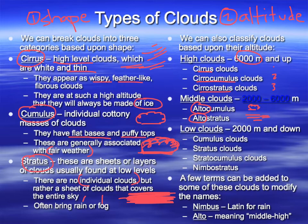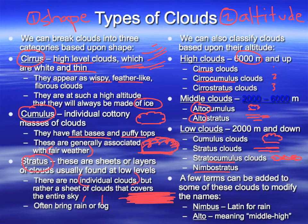Our low clouds, just a few thousand meters off the surface, include cumulus clouds, stratus clouds, and a combination of those two — stratocumulus — and then nimbostratus. If you include the word 'nimbus' on any cloud, it means it's raining. You also have cumulonimbus, which we'll learn a lot about later in the year because cumulonimbus clouds are thunderstorms.